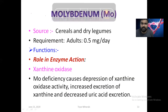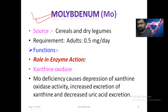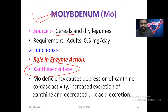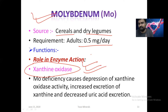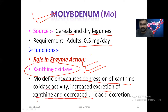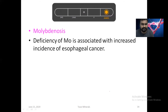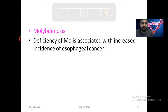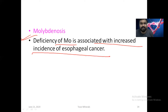Now coming to molybdenum. The most important thing to remember about molybdenum is that it is a component of xanthine oxidase. Sources are cereals and dry legumes; daily requirement is 0.5 mg. Molybdenum deficiency causes depression of xanthine oxidase activity, increased excretion of xanthine, and decreased uric acid excretion. This condition is called molybdenosis. Deficiency of molybdenum is also associated with increased incidence of esophageal cancer.